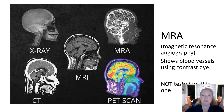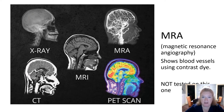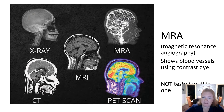Here you can see some examples of the different types — you're looking at the same body part. MRA shows blood vessels using contrast dye, but that one I'm not testing you on.